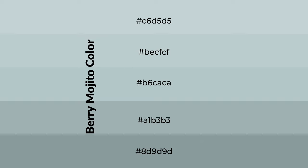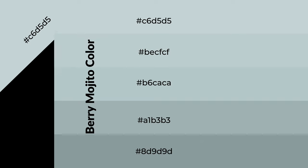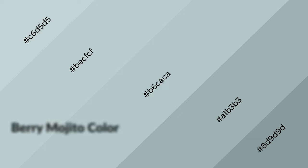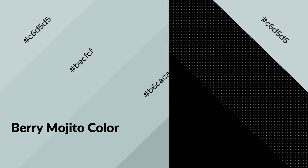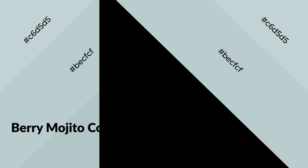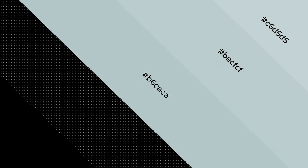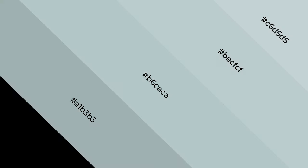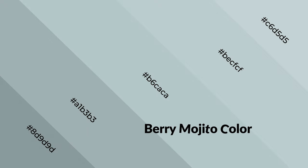To generate shades of a color, we add black to the color. Shades are used in patterns, 3D effects, and layers, and they create depth and drama. Berry mojito is a cool color and it emits calming, serene, soothing, refreshing, spacious, unwinding, peaceful, and relaxed emotions.